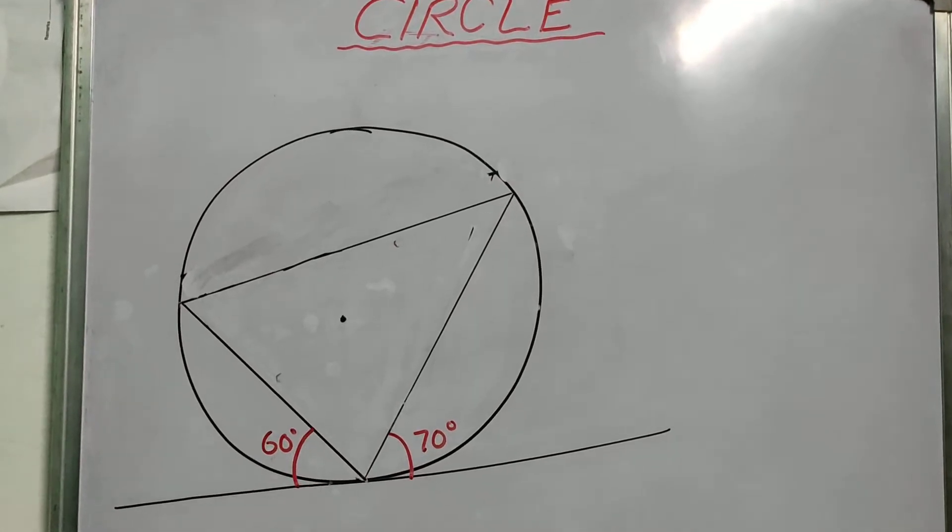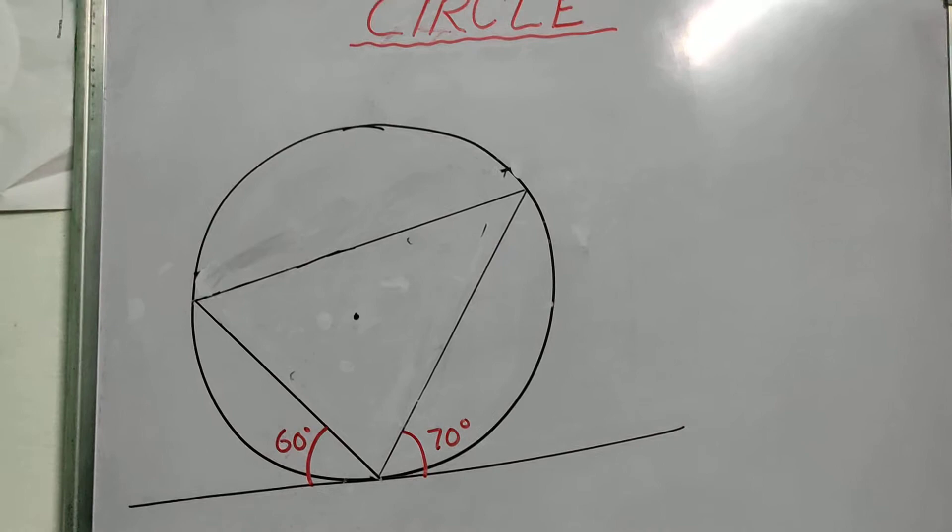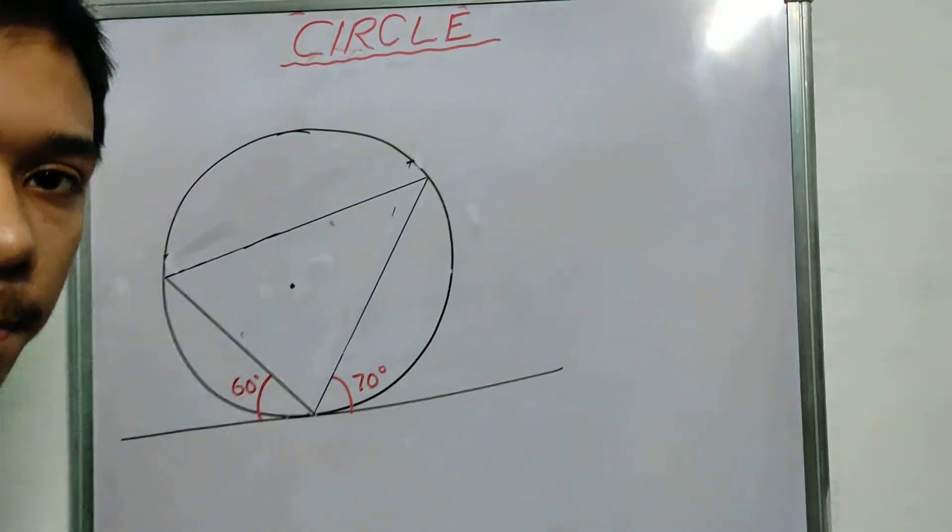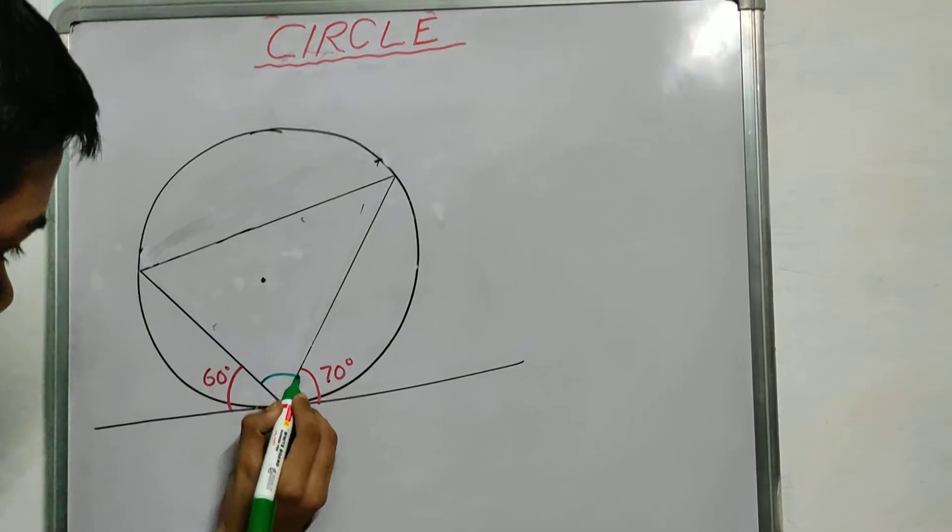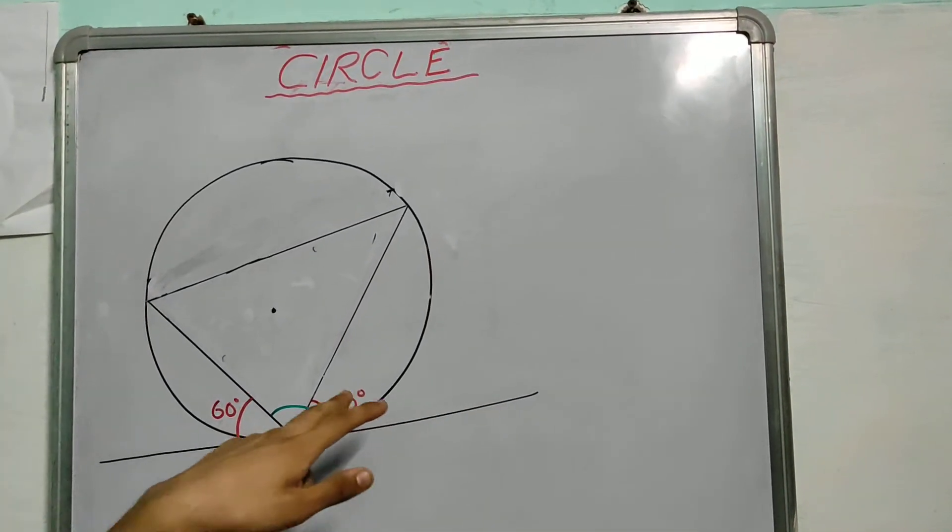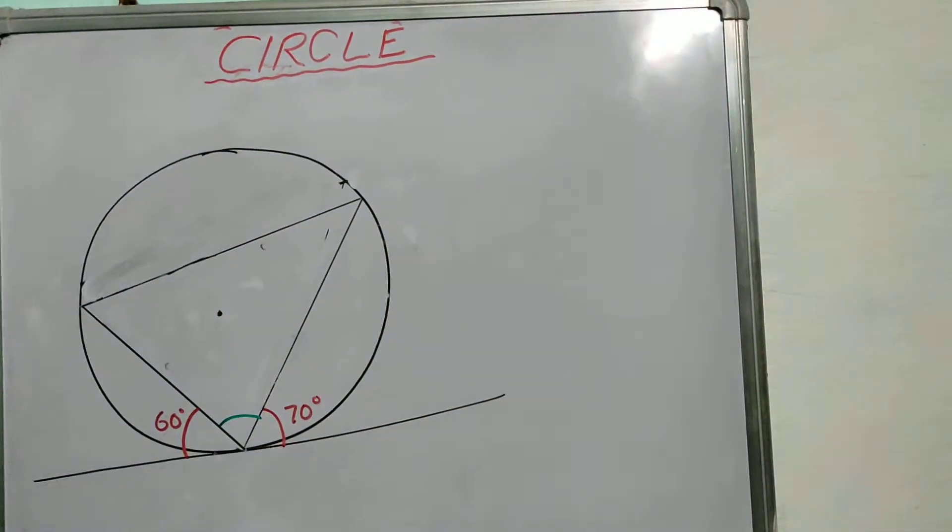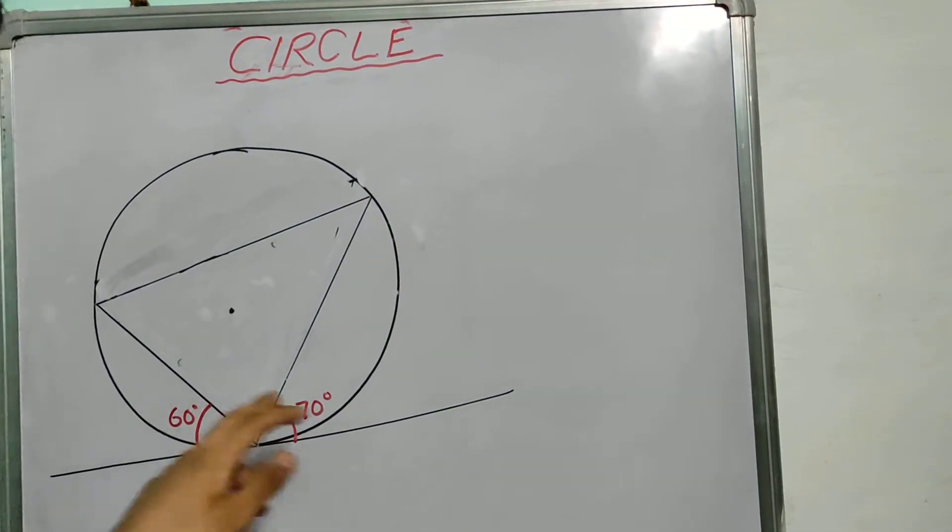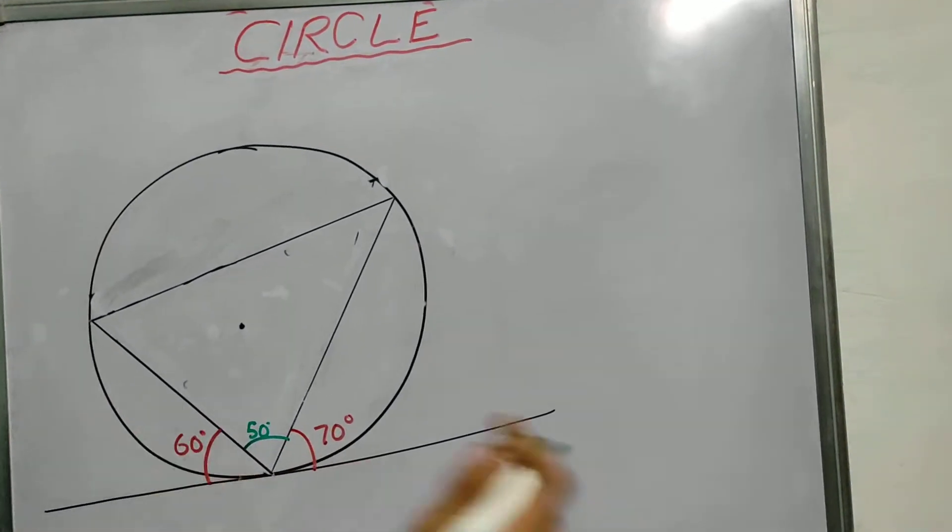Now the task is you need to find all the angles of this triangle. Give it a try. Pause the video and give this a try. Now that you have attempted it, let's do this together. This one is trivial. You can easily use the property that all these angles will add up to 180 degrees. So this will be 50 degrees. 60 plus 70 plus 50 is 180.